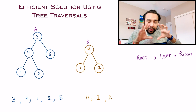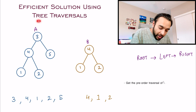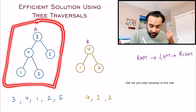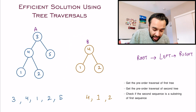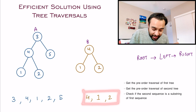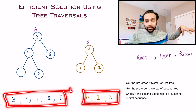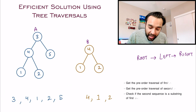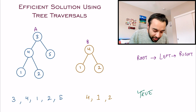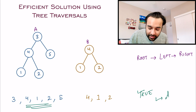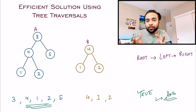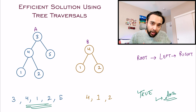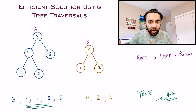So this is the concept to apply. You get the pre-order traversal of your first tree, then the pre-order traversal of your second tree, and just check if the shorter sequence is a substring of the bigger sequence. If yes, return true; else return false. In this case, true is your answer. It is up to you — you can choose the in-order or the post-order traversal technique as well. An important thing to notice is that the level-order traversal technique will not give you a correct answer.